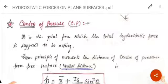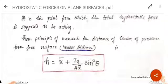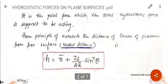Now we will discuss a very important point — where this force is acting on the plate — which is known as the center of pressure, denoted by CP. It is the point from which the total hydrostatic force is supposed to be acting. From the principle of moments, the distance of the center of pressure from the free surface or water level is given by the formula: h = x̄ + Ig/(Ax̄·sin²θ), where h represents the center of pressure.